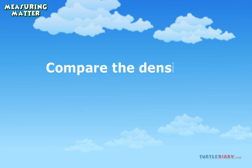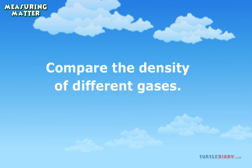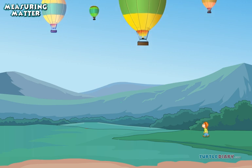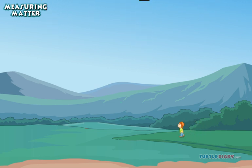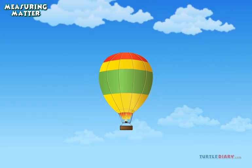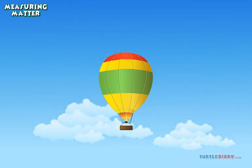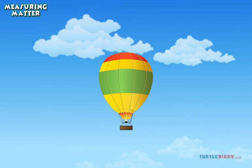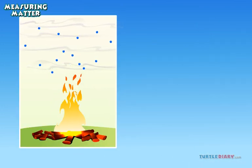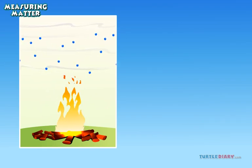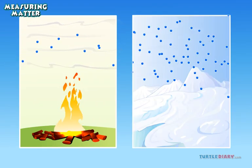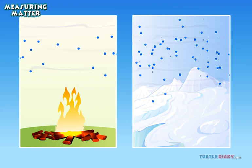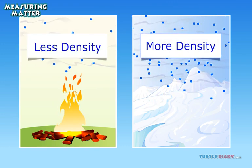Now let's compare the density of different gases. Have you ever seen a hot air balloon floating up in the sky? The balloon is able to go up because hot air has less density than cold air. So when the air is heated, up it goes. Which one has more density — hot air above fire or cold air above ice? Cold air above ice is denser than hot air above fire.